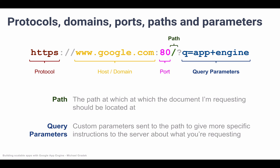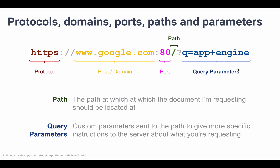Another example could be looking at some kind of user profile. If there are many users, how do we know which user we're looking for? We could pass in the user ID or username into the query parameters to tell the server which user we are looking for. In this case, we're telling Google what our query is — essentially what we're searching for. In this case, we are searching for App Engine. So that was how a URL is built and what its main components are.